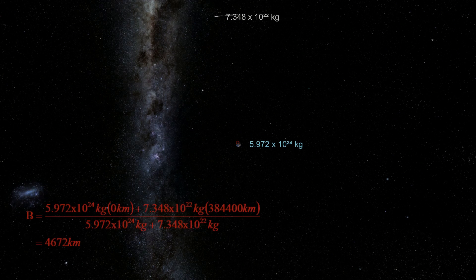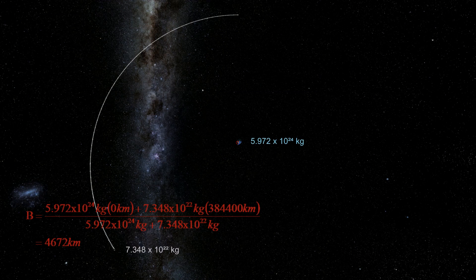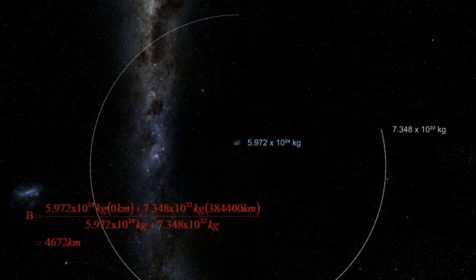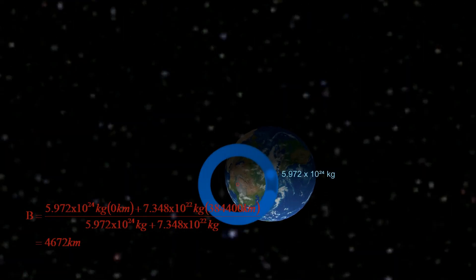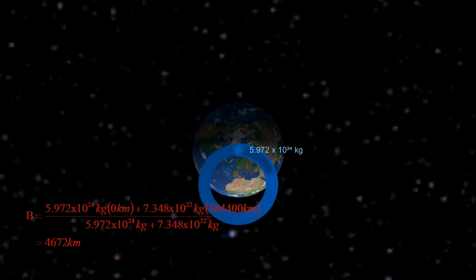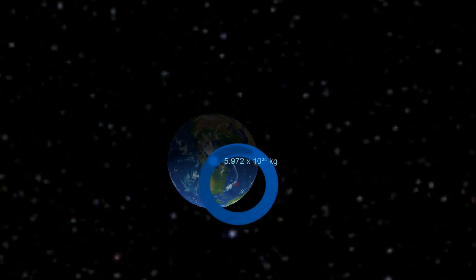If we now display the moon, earth and distance between them according to scale, we can calculate and indicate its barycenter. The earth's mass is just more than 81 times the mass of the moon and the barycenter is therefore close to the earth's center of mass. It lies about 4,672 kilometers outward from the earth's center of mass, which is about 73% of the radius of the earth.